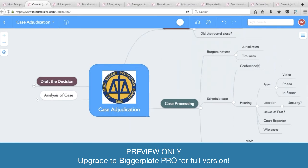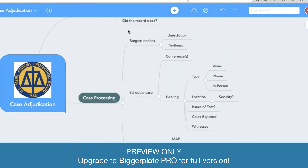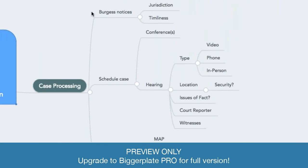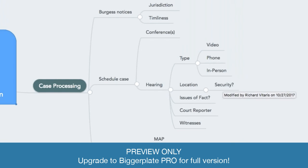Similarly, for case processing, this serves as a checklist for me to make sure that everything I need to take care of is done — that my notices are set, which I've just alluded to, and that I've scheduled the case. I would put down here under hearing, for instance, I would list the location of the hearing, whether I've arranged for courtroom security, because I travel to seven different states out of the Atlanta regional office where I work.